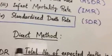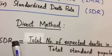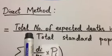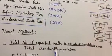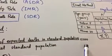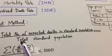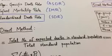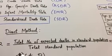SDR is the ratio of total number of expected deaths in standard population multiplied by one thousand, divided by total standard population.